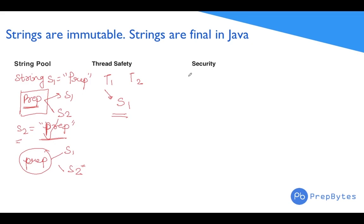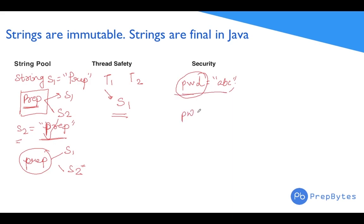The third reason is security. We often pass passwords, names, and email IDs as strings. If someone gets into your code and tries to change a string — for example, a password object holding 'ABC' — no matter what the person tries to do, the change of content won't happen. If the person tries to change the password, a new string gets created and the original remains intact.